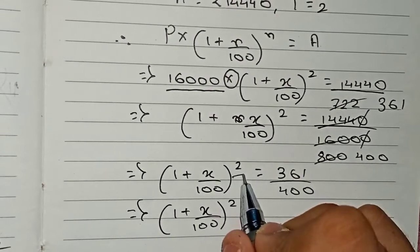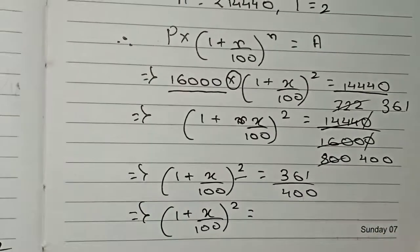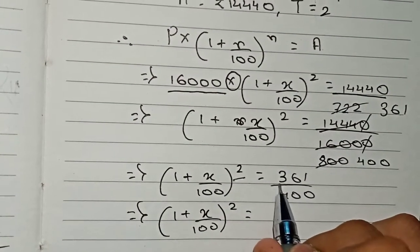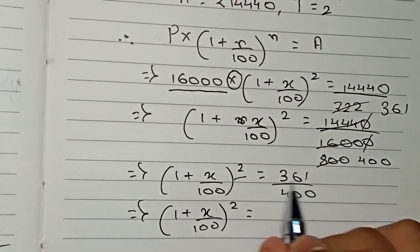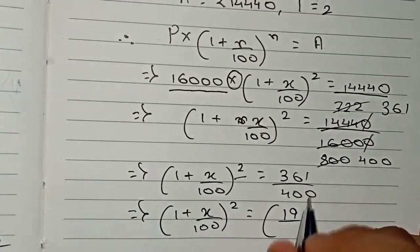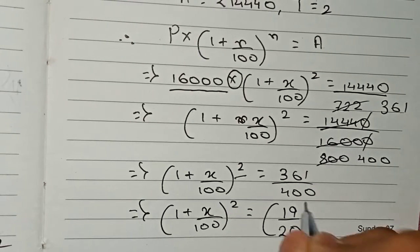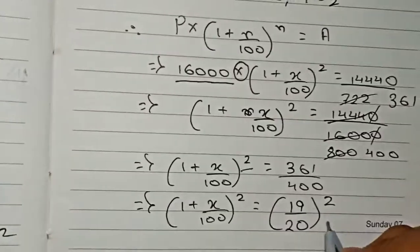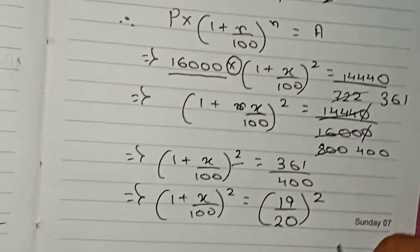If we look at this carefully, we can easily identify that 19 squared is 361, and 20 squared is 400. So it's (19/20) squared. This number we are expressing in terms of square.